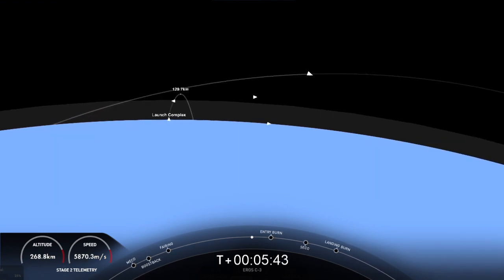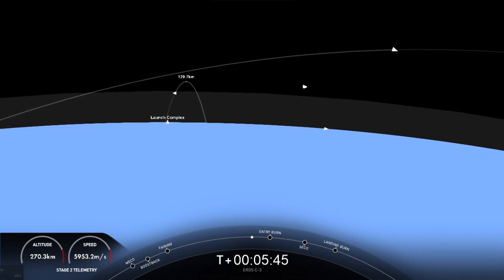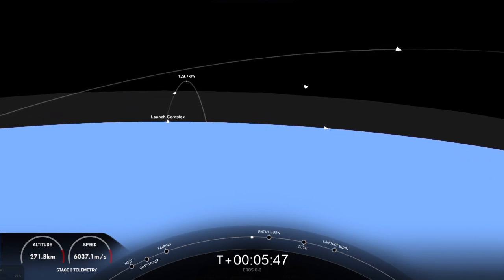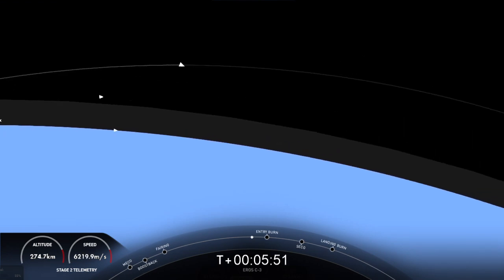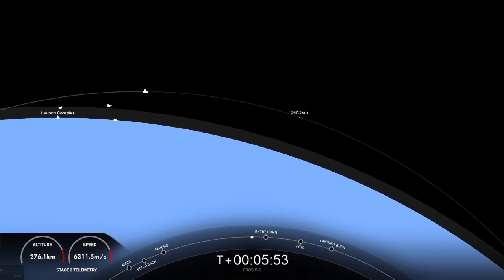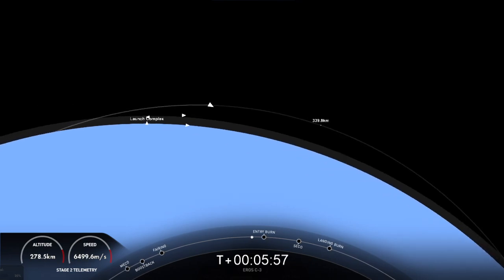And we are just about a minute away from SICA 1, or second stage engine cutoff 1. That is where we will shut down this MBAC engine that you are seeing ignited at the moment. We will shut that engine down and allow the vehicle to coast with the payload until it reaches its targeted drop-off orbit.